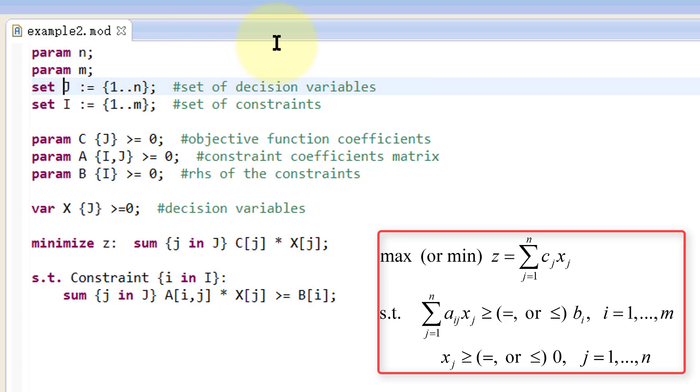Set is another keyword. It defines a finite collection of elements. These elements can be numerical or non-numerical, and they are frequently used as indexes. Here we define capital letter J, which is a set that contains the indexes of all the distinct variables x1 through xn. We put them in a pair of braces, but two dots denote from 1 to m.